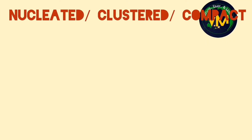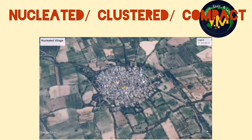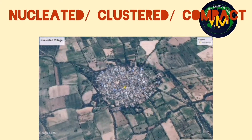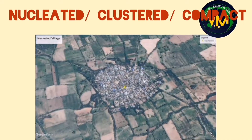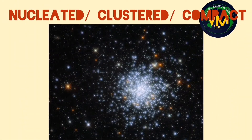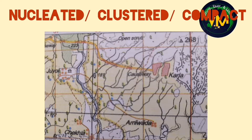Nucleated pattern is also called clustered or compact. In this pattern the huts are located close to each other. You can remember this with the word cluster — cluster means a group. So in clustered, compact, or nucleated settlements the huts will be close to each other; they will be together.